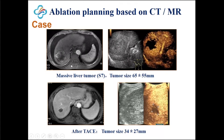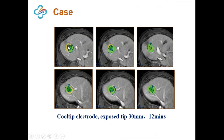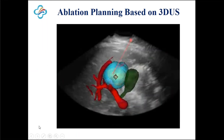The third part is planning. Before TACE, the tumor size was more than six centimeters. After TACE, the tumor shrank to three centimeters, but contrast-enhanced ultrasound still shows blood flow inside the lesion, so we have to do the ablation. We use multiple ablative volumes to cover the whole lesion, as well as a five-millimeter ablative margin around the tumor, shown in yellow. Then we do the ablation according to the planning.